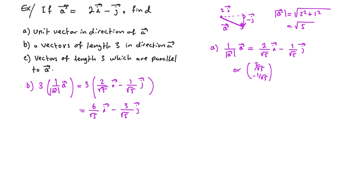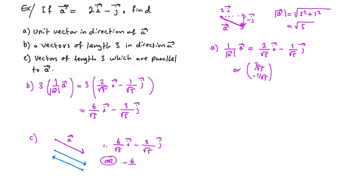For vectors of length 3 parallel to vector a, note that a parallel vector can have the same or the opposite direction. So one answer is (6/√5)i − (3/√5)j, and multiplying by −1 gives the vector in the opposite direction: −(6/√5)i + (3/√5)j. Both have length 3 and are parallel to vector a.